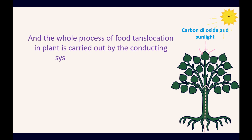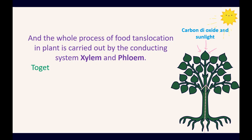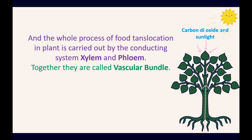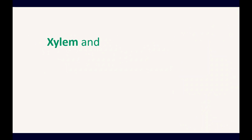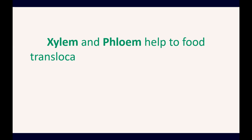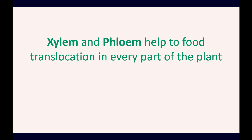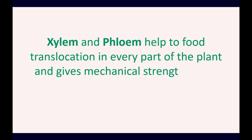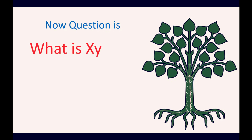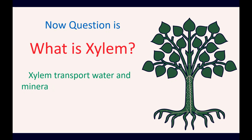The whole process of food translocation in plants is carried out by two conducting systems called xylem and phloem. Together they are called the vascular bundle. Xylem and phloem help with food translocation in every part of the plant and provide mechanical strength to the plant. Now, what is xylem? Xylem transports water and mineral salts from the roots to the aerial parts of the plant.